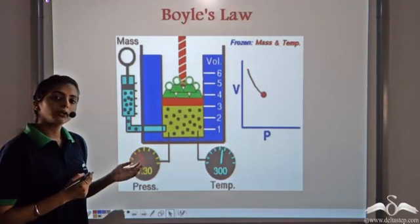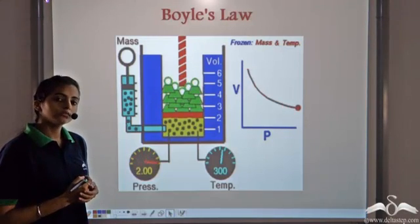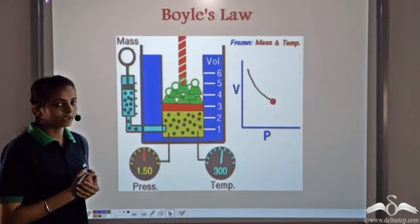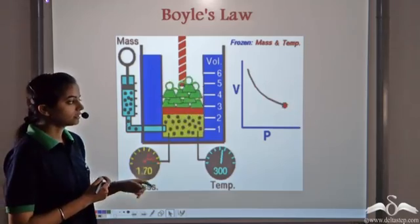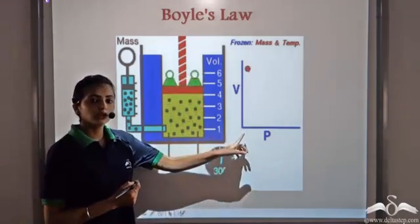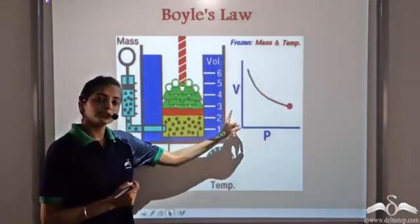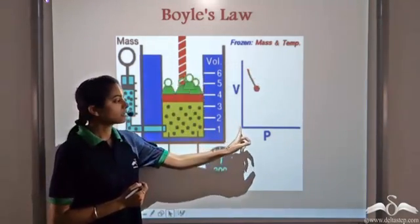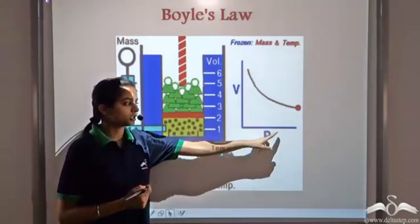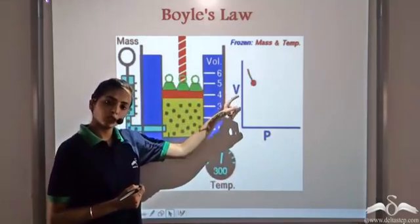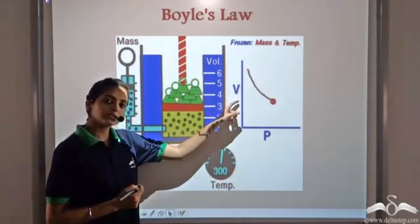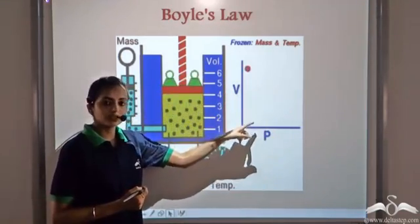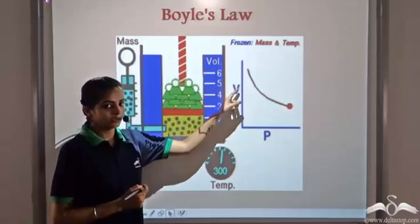Boyle's law states that for a particular gas, the pressure and volume are inversely related. This means as the pressure increases, volume decreases, and as the pressure decreases, volume increases.